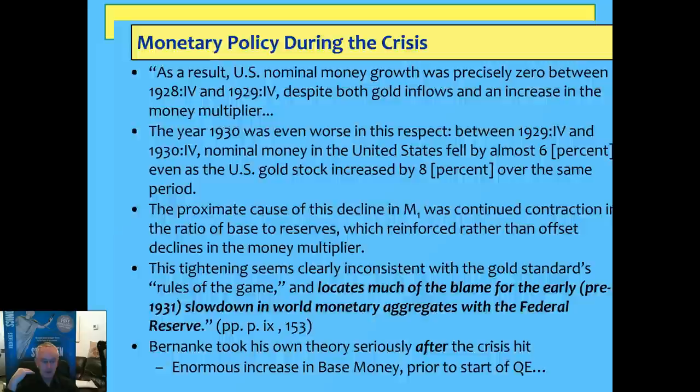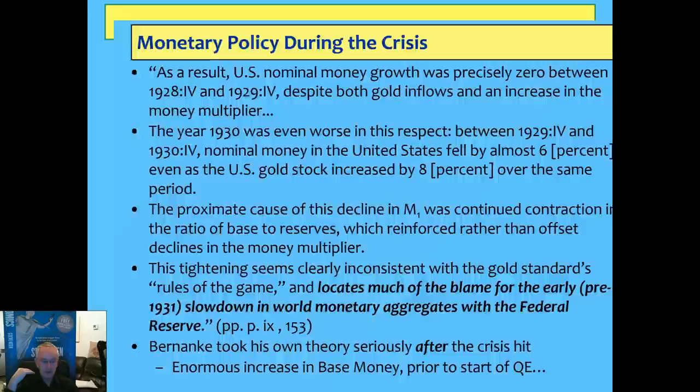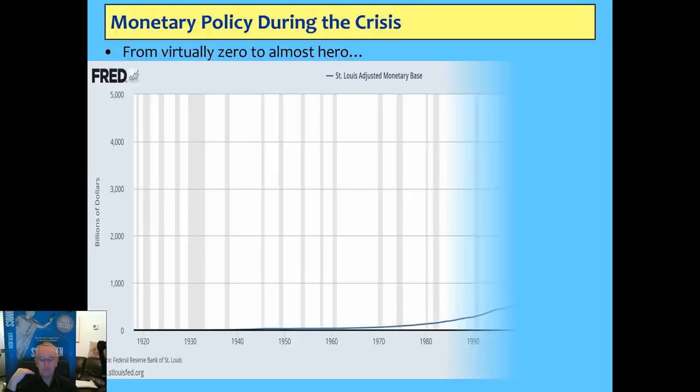The reason that's useful background is because Bernanke clearly took his own theory seriously when the crisis struck in 2008, because he had an enormous increase in base money — this was well before QE started to happen. And if you take a look at the graph, it's quite remarkable — bang.